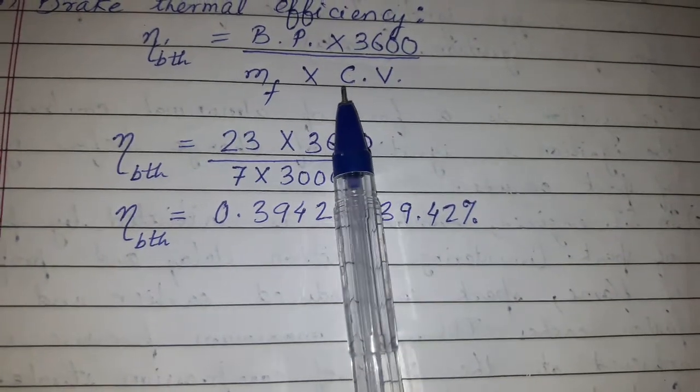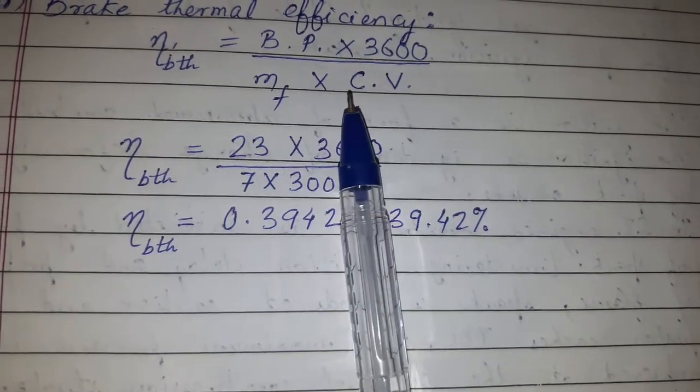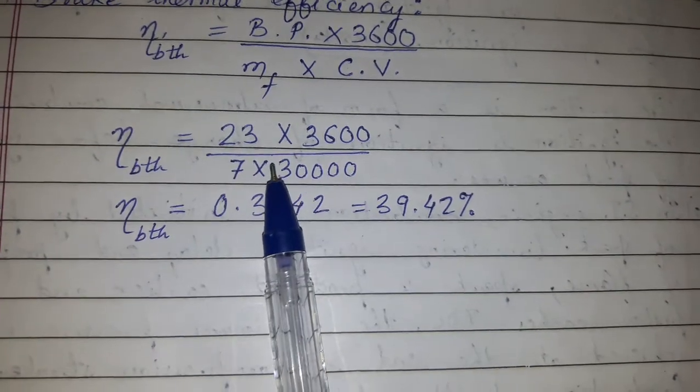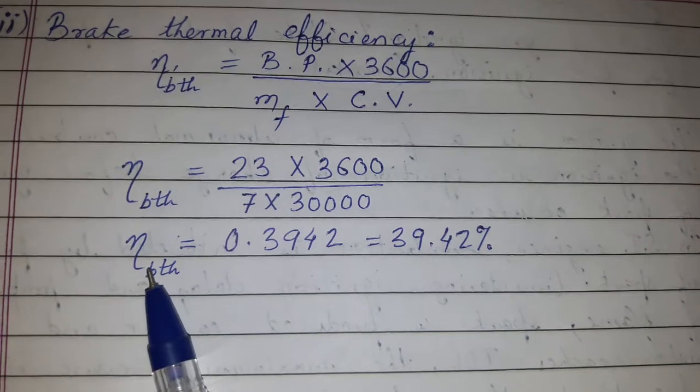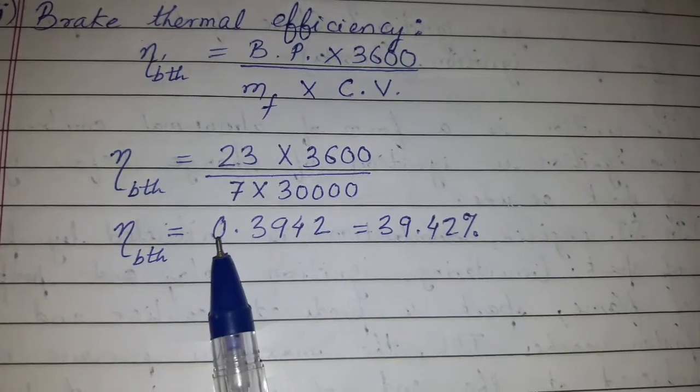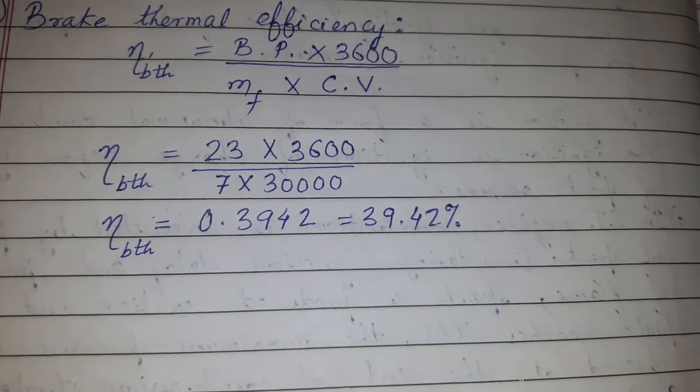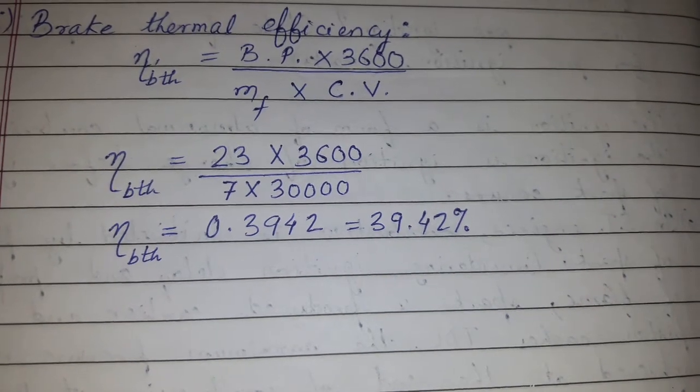MF is 7 kg/hour, and CV is 30,000 kJ/kg. Substituting the values: η_bth = (23 × 3600) / (7 × 30,000) = 0.3942 or 39.42%. Please like, comment, share, and subscribe. Thanks for watching!